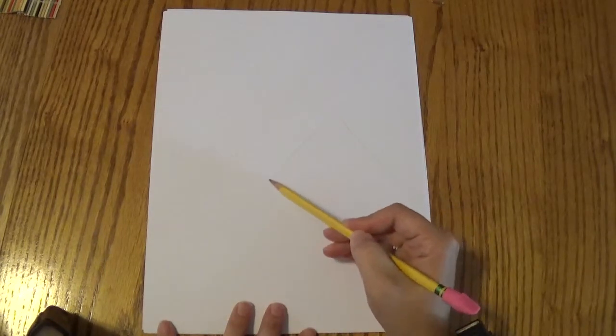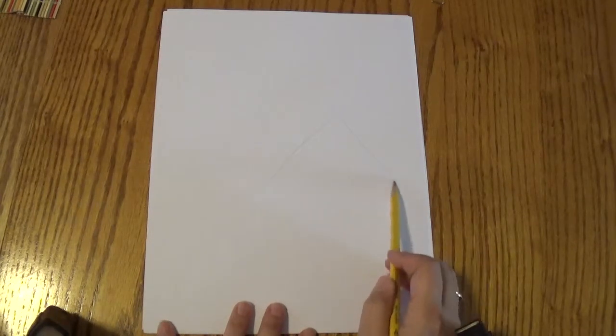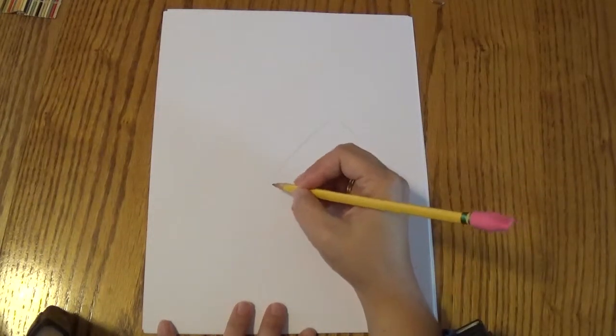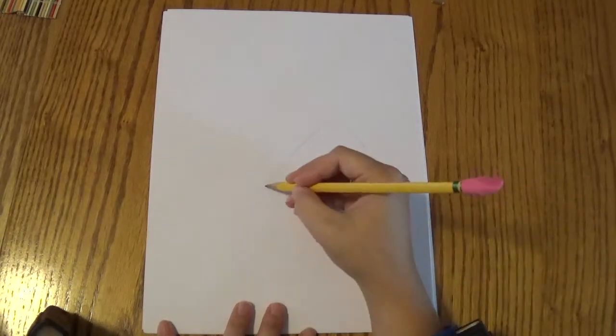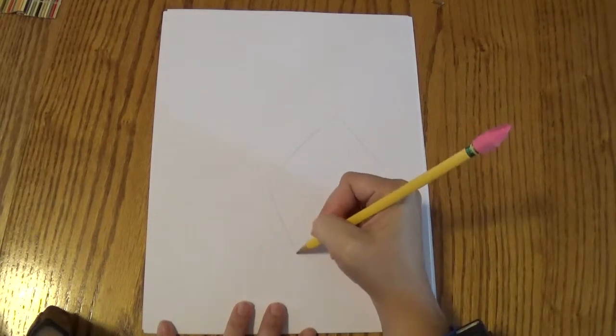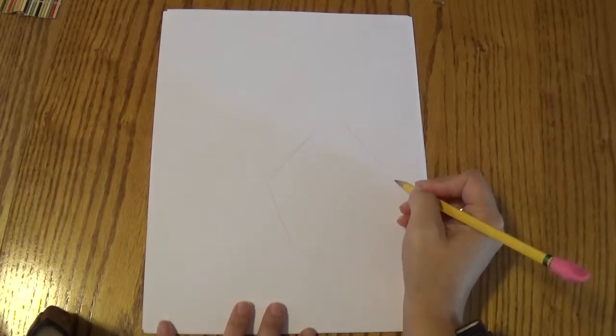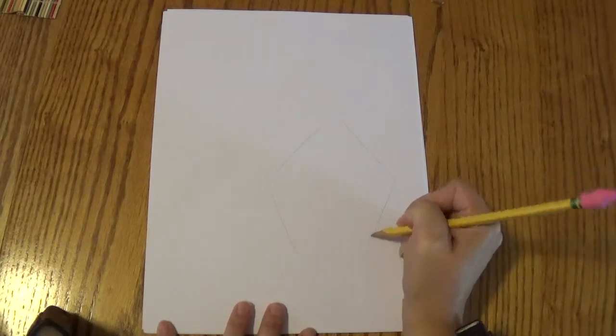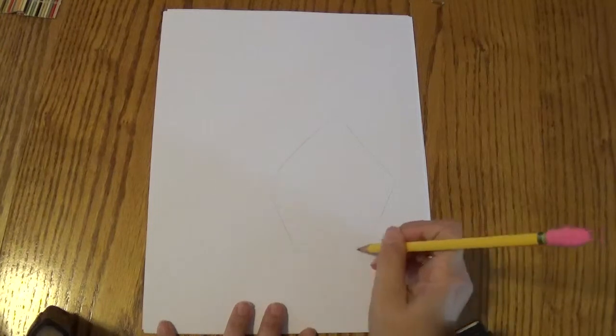And I'm going to draw this line nice and light because this is going to be erased later. And then you can do the same thing, but we're going to angle them in and they're not quite going to touch at the bottom. So we're going to angle them in just a little bit. These are light lines again. See how there's a gap at the bottom?